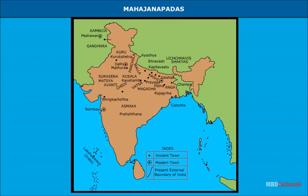These 16 states were always trying to capture each other's territory. Four powerful states emerged out of this rivalry: Vatsa, Avanti, Kosala, and Magadha.